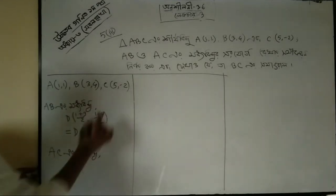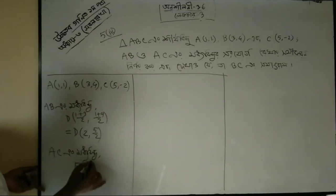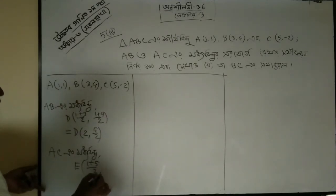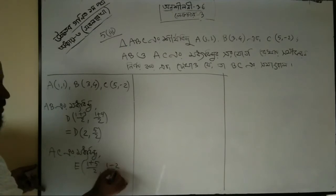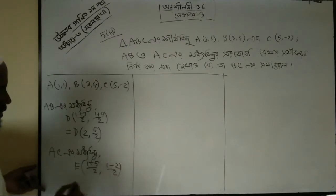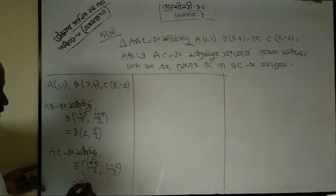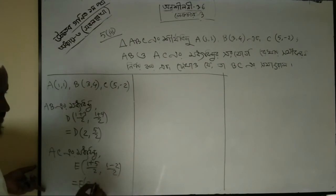Now calculating: 1 plus 5 divided by 2; 1 minus 2 divided by 2; 1 minus 3 divided by 2; and 3 divided by 1.